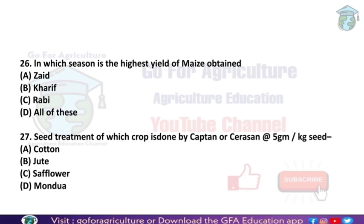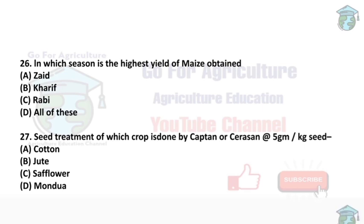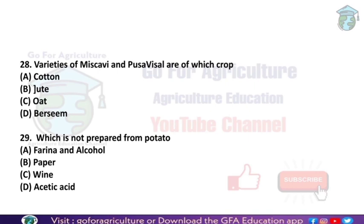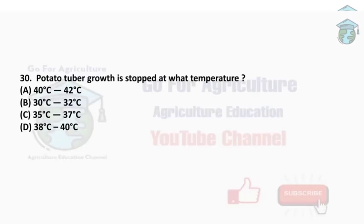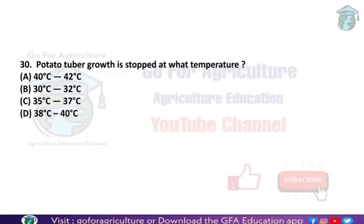The MCQs we have covered include seed rates, chemicals to control particular diseases, high-yielding varieties, Green Revolution, and grafting or propagation methods — mostly from agronomy related to field crops. In our playlist, we are covering each and every crop. I would request you to go through them so you can easily solve these kinds of MCQs.